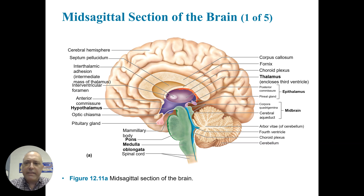This is a sagittal or mid-sagittal section showing the cerebral cortex. Deep to that we've got the thalamus; inferior to the thalamus we've got the hypothalamus. Posterior, we've got the epithalamus. Then the midbrain, pons, and medulla. The central canal here is the fourth ventricle.